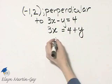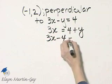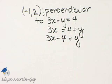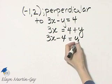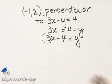And now I'll subtract 4 from both sides, I'll have 3x minus 4 is equal to y. Once we've solved for y, don't forget the coefficient of x is the slope.